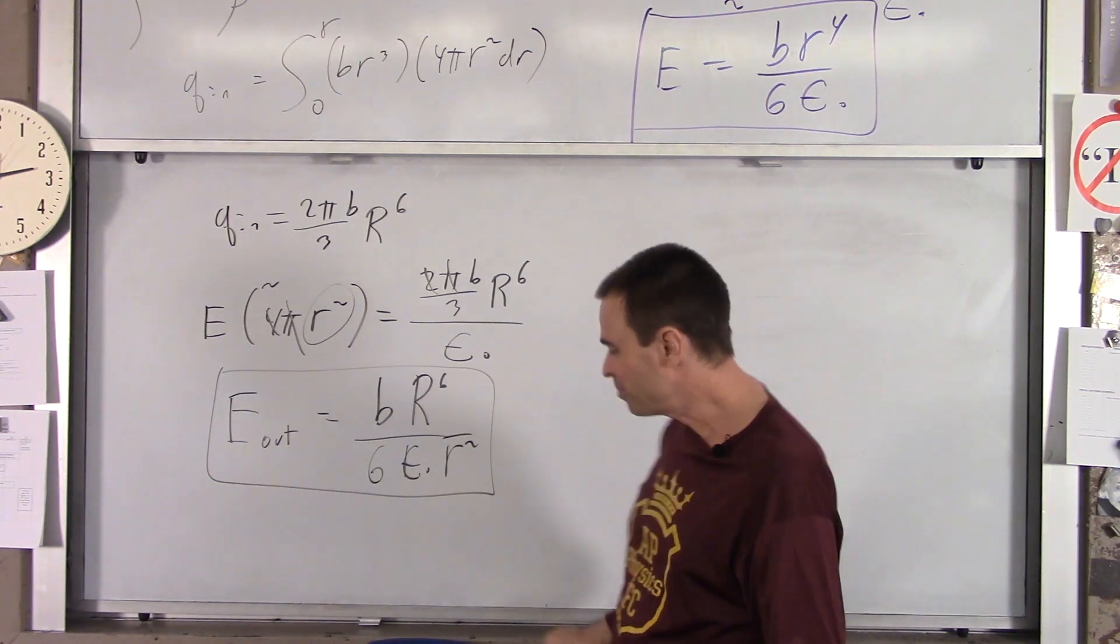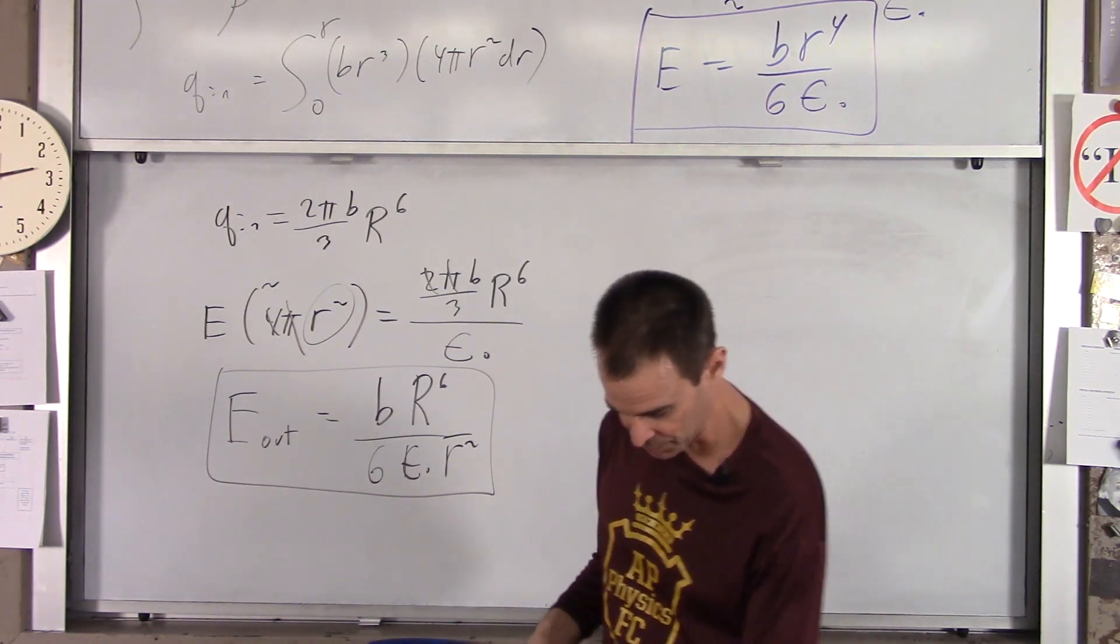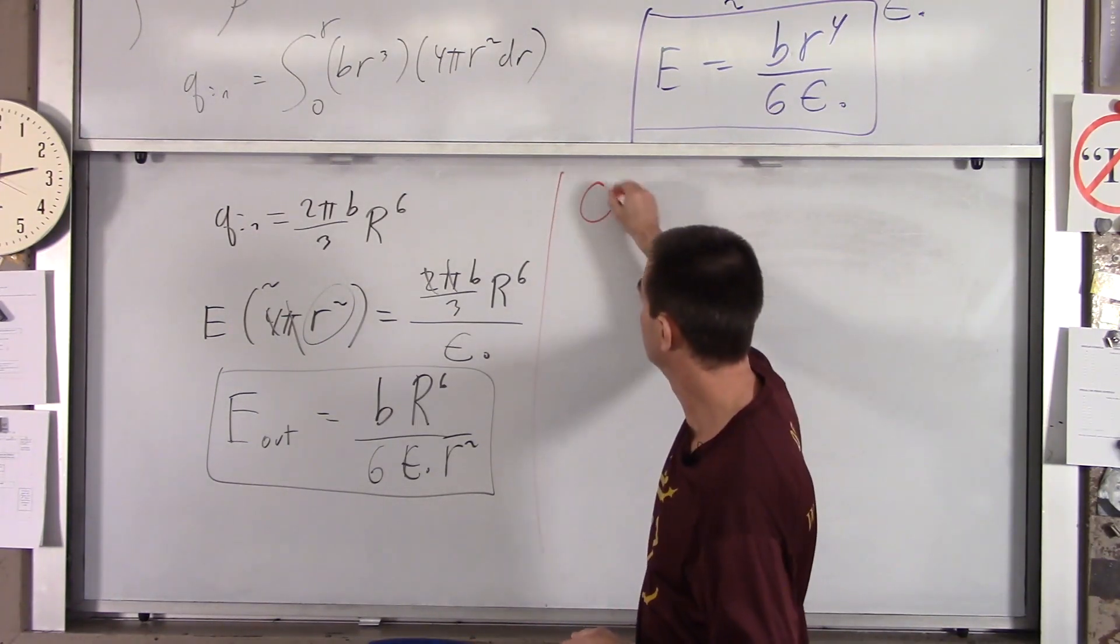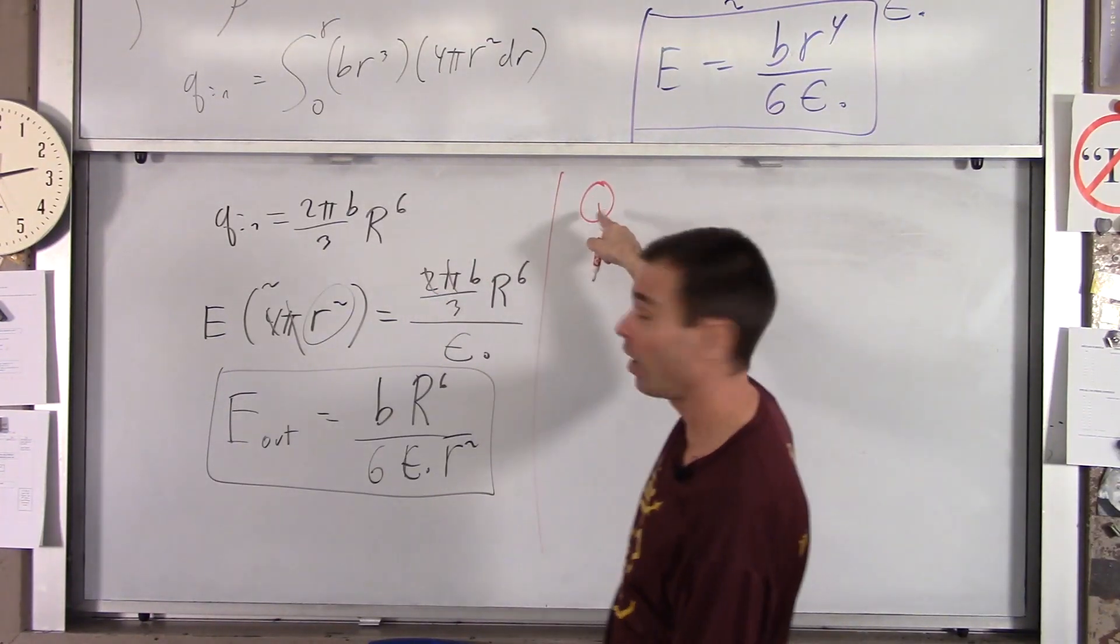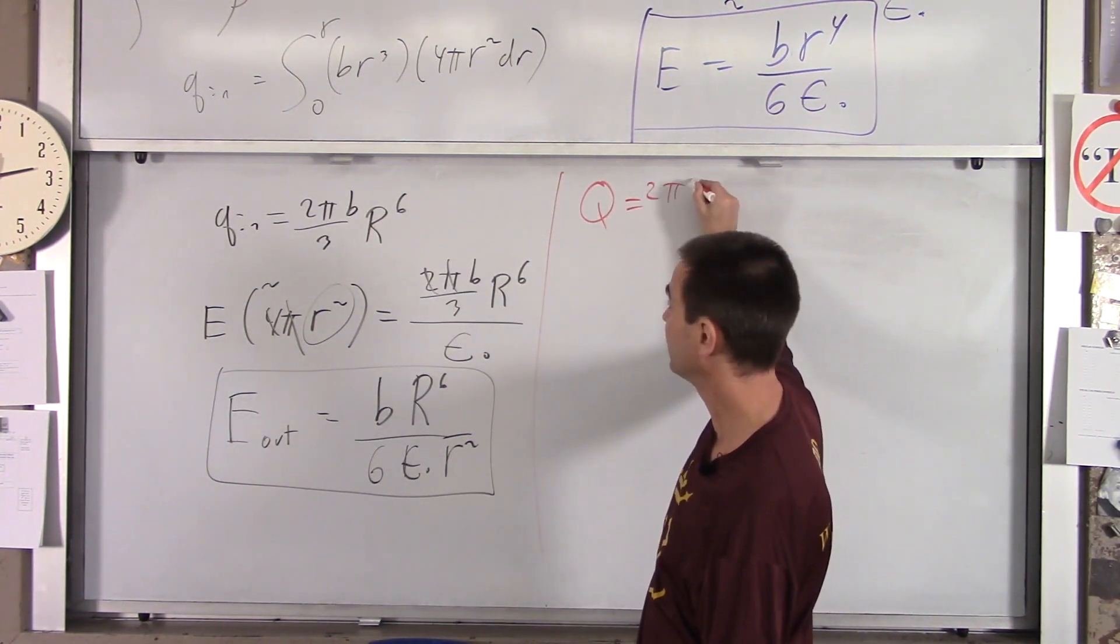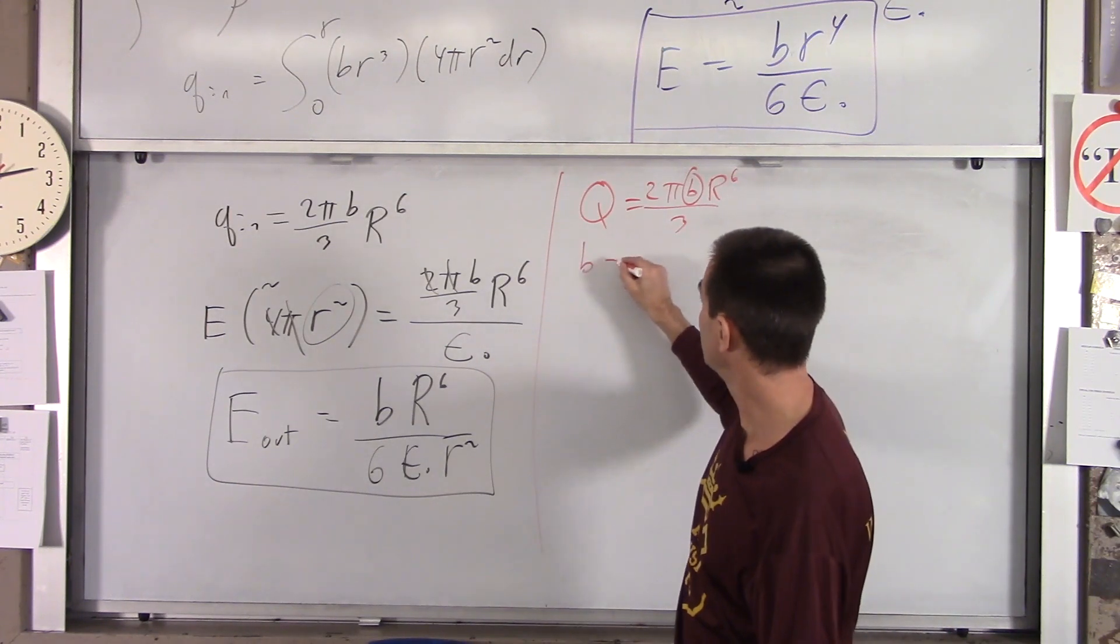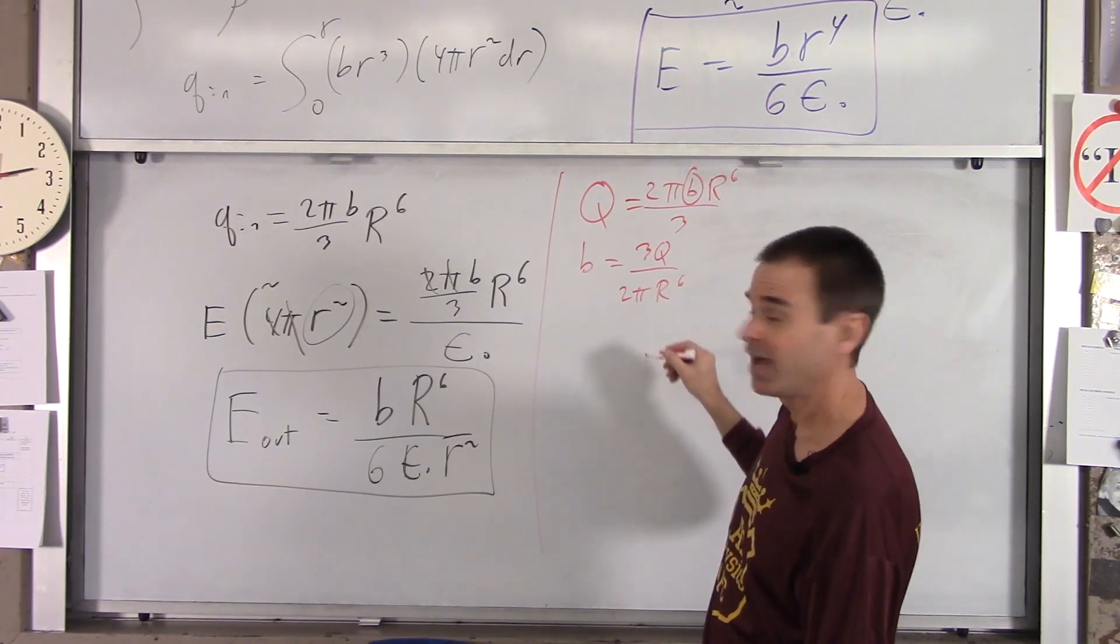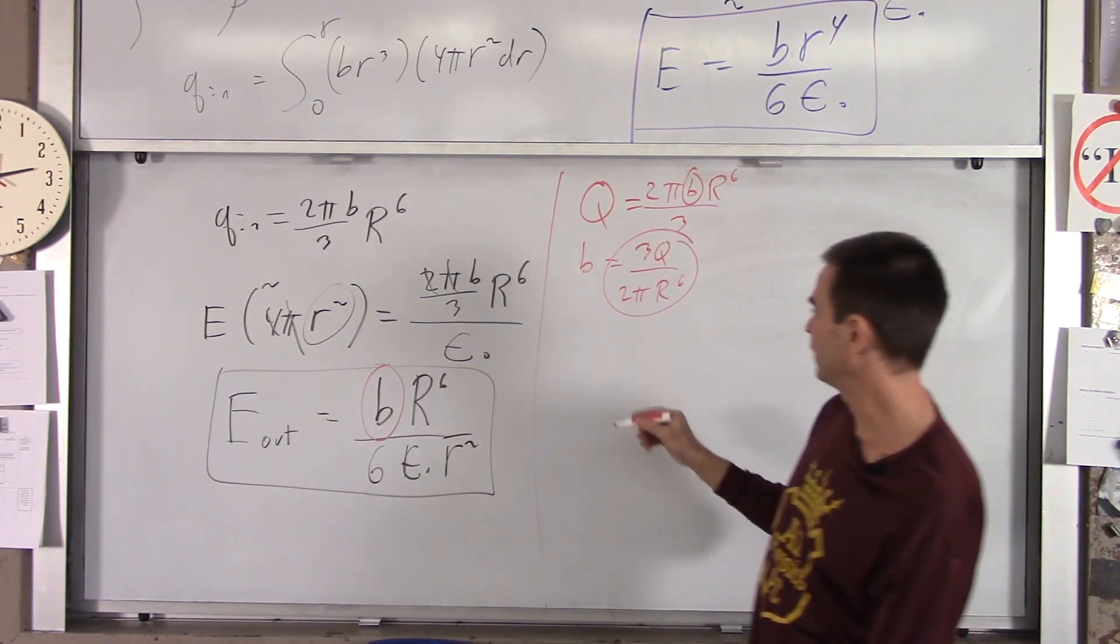Now, having said all that, it should be equivalent to kq over r squared. So check it out. If we look at q_in, the total charge of our sphere is when you plug this in. So q of the entire fuzzy ball charge is simply this. So I'm going to write that down, 2 pi b big R to the sixth over 3. I'm going to get b by itself. So b equals 3q over 2 pi r to the sixth. I'm then going to sub that in for b right here.